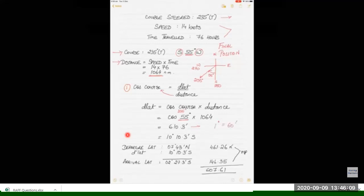Meridional parts for 7°43'N is 461.56 and for 02°27.3'S is 146.35. Difference in meridional parts: we will add because it is north and south, so 461 plus 146 is 607.61.